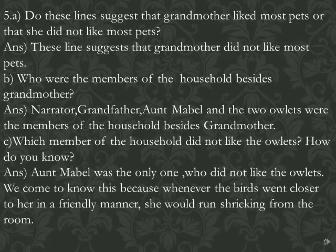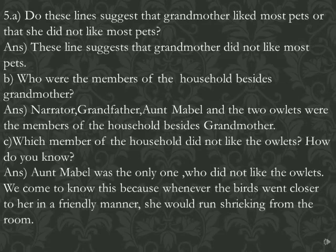Number C: Which members of the household did not like the owlets? And the connected question: How do you know? Aunt Mabel was the only one who did not like the owlets. Change the paragraph and write: We come to know this because whenever the owlets went closer to her in a friendly manner, she would run shrieking — that is, shouting — from the room.